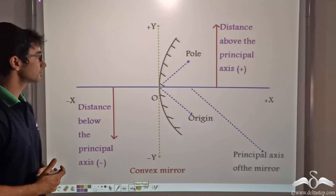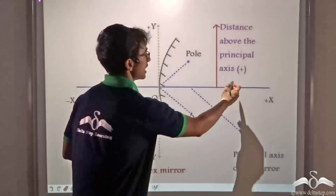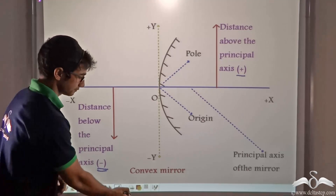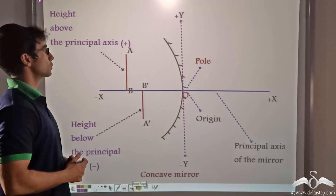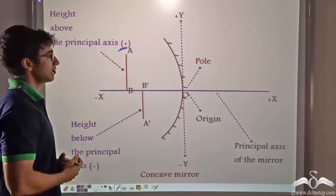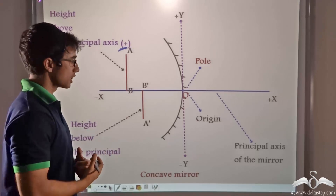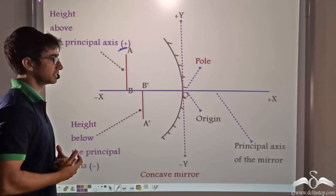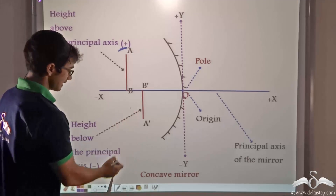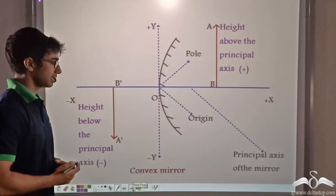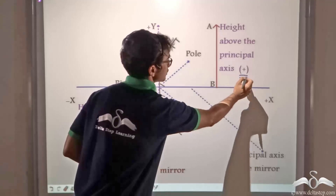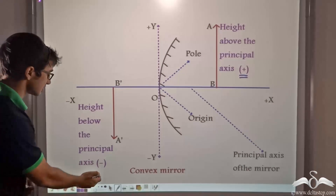In the case of a convex mirror, distances or heights above the principal axis are positive, and distances or heights below the principal axis are negative. In the case of a concave mirror, when we keep an object on the principal axis in front, the object height is measured as positive. When a real image is formed by a concave mirror, the image is always inverted — it lies below the principal axis — so the image height is considered as negative.